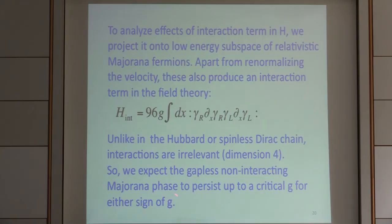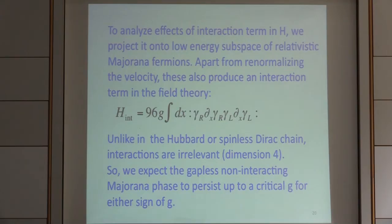This tells us immediately that we should expect the gapless non-interacting Majorana phase to persist up to a critical value of g for either sign of the coupling constant. I refer to this as the Ising phase, because a model of gapless Majorana fermions in one dimension corresponds to the Ising model. In fact, the full Hamiltonian is actually related to a spin problem — if we throw away interaction terms, the spin problem corresponds to the Ising model. So at least up to some critical coupling, and maybe all the way to infinity, we remain in this trivial gapless non-interacting Majorana or Ising phase.